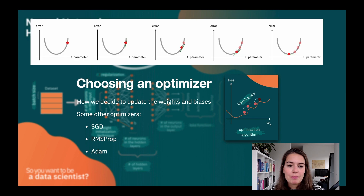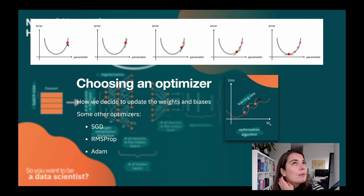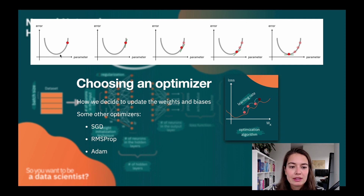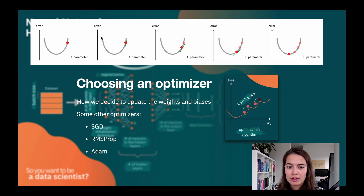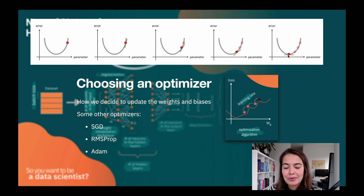Gradient descent works through backpropagation, which calculates how much each parameter contributes to the error. We'll have a graph showing how the parameter and the error are related to each other. Gradient descent calculates the slope of this curve, telling us which direction to go — further and further until we find a minimum value. This is done for all parameters at the same time, and how large the steps we take are is determined by the learning rate.